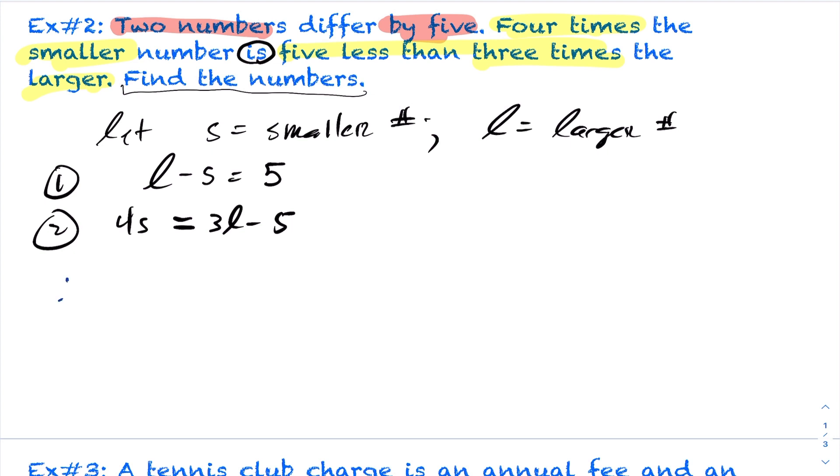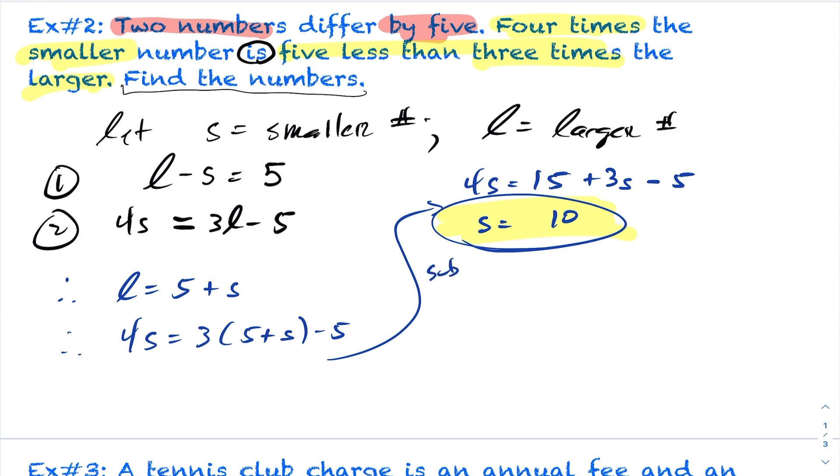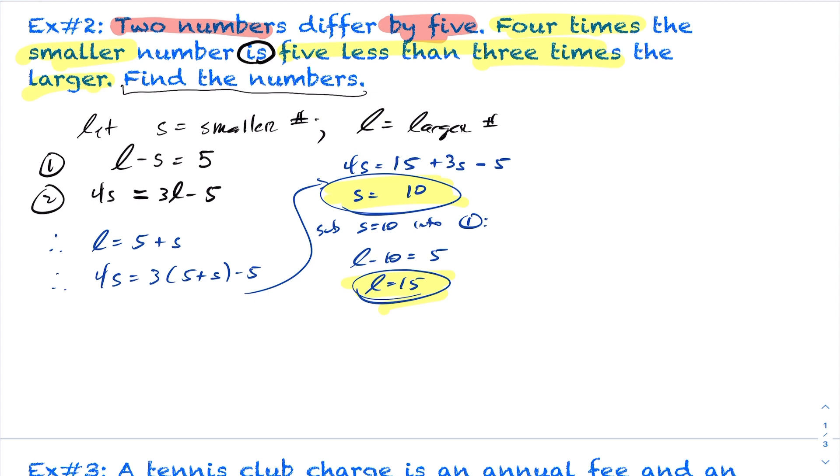I can go ahead and do substitution. So therefore, I know l is 5 plus s. So everywhere I see an l, I can change it to a 5 plus s. And solving this here, you get 15 plus 3s minus 5. s is 10. If you go ahead and solve this, you end up getting that s is 10. So if I know s is 10, therefore I can sub s is 10 into equation 1 or 2. I'm going to choose equation 1 because it's nicer. So here, you'll get l minus 10 is 5, in which case l is 15. The two numbers are 15 and 10.